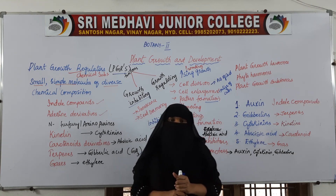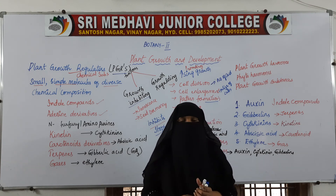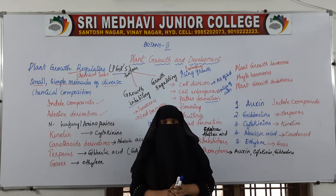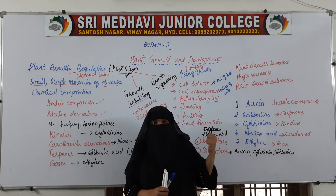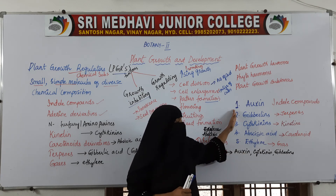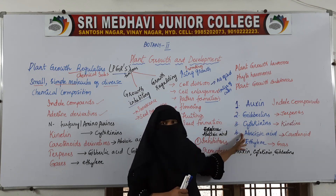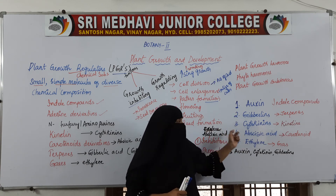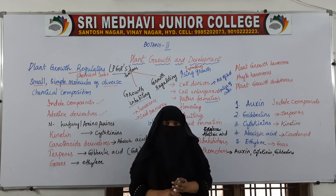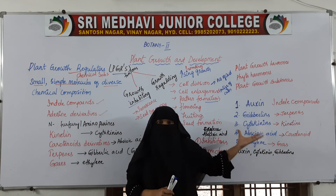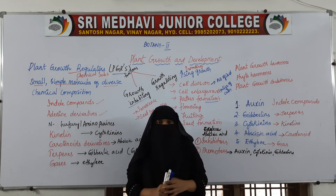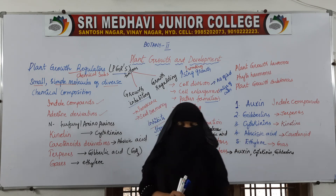In the next class, we will see the discovery of plant growth regulators — how the discovery took place, who the scientists were who discovered these regulating substances, and in detail how auxin, gibberellin, and cytokinin help in promoting growth, how abscisic acid helps in inhibiting growth, and how ethylene works. We will start with the history and discovery of plant growth regulating substances in the next class. Thank you very much.